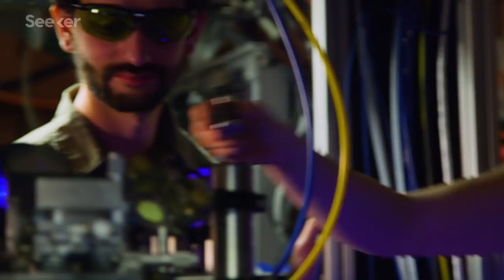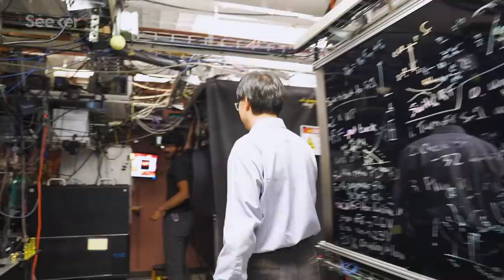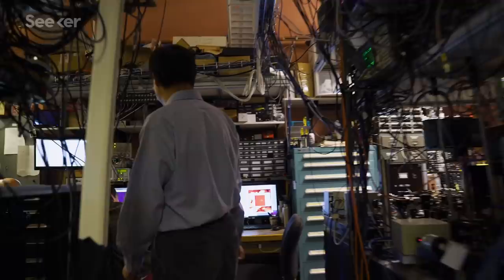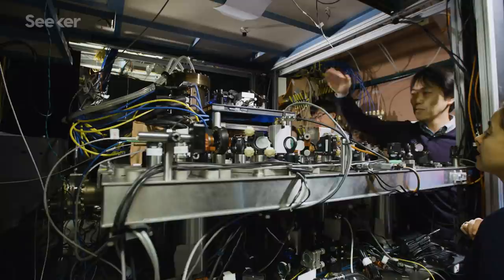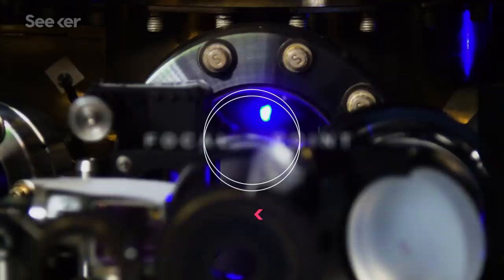Inside this basement lab, a team of physicists are wrangling atoms at super-high speeds and suspending them in optical traps to measure atomic ticks. When you walk into our lab, the first thing that comes to your mind is like, oh man, that's crazy. On this tabletop, Junyi and his team at JILA have built the world's most precise atomic clock, and it gets its ticks from the vibrations of 10,000 atoms.